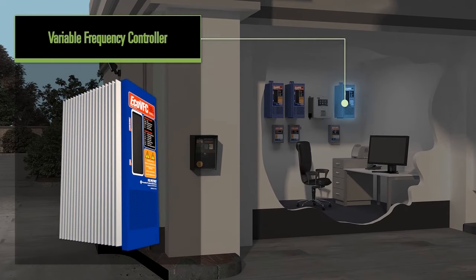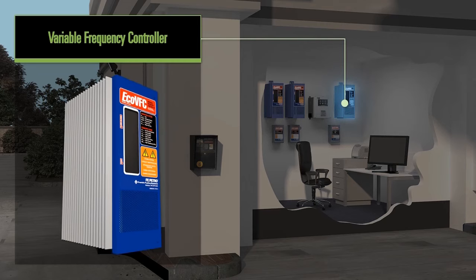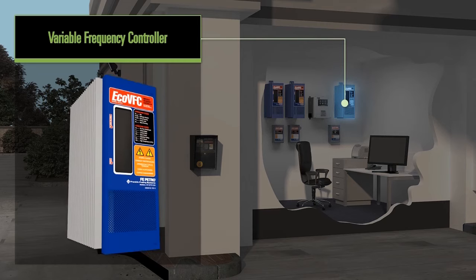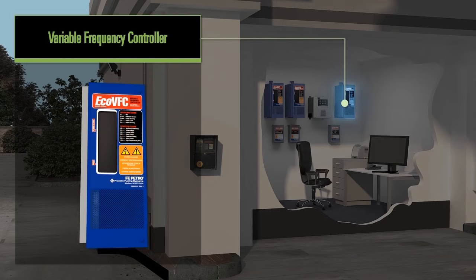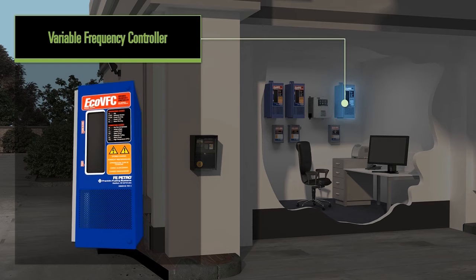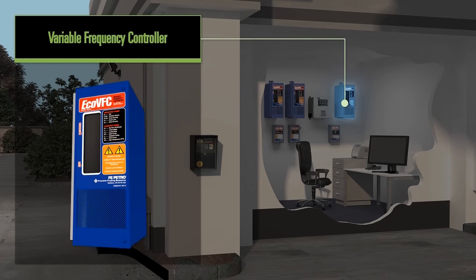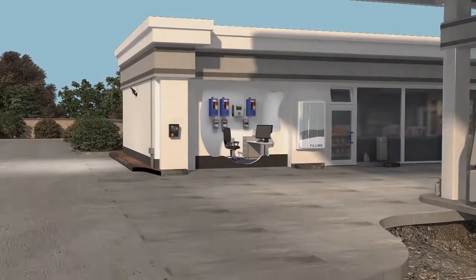For every submersible pump, there are controllers that communicate with the dispenser to initiate power when it is time to move fuel. In the case of variable speed pumps, the controller also varies the impeller speed to provide consistent fueling equally during busy and slower fueling times. The variable speed controller can also communicate the pump status to run the station as efficiently as possible.